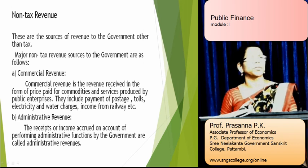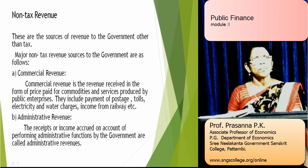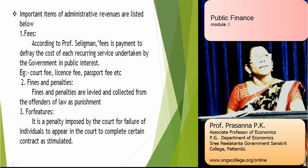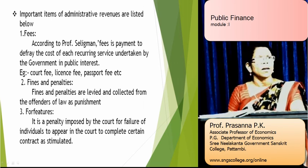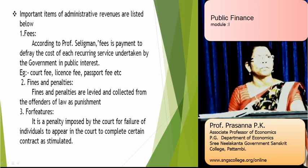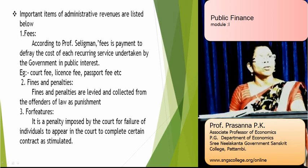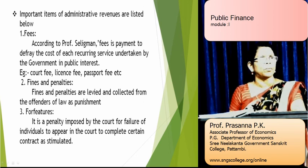What is administrative revenue? Administrative revenue is the income accrued on account of performing administrative functions of the government. Various items included in administrative revenue are fees, fines and penalties, forfeiture, estate, special assessment, etc. According to Professor Seligman, a fee is a payment to defray the cost of each recurring service undertaken by the government in the public interest. Examples are court fee, license fee, passport fee, etc.